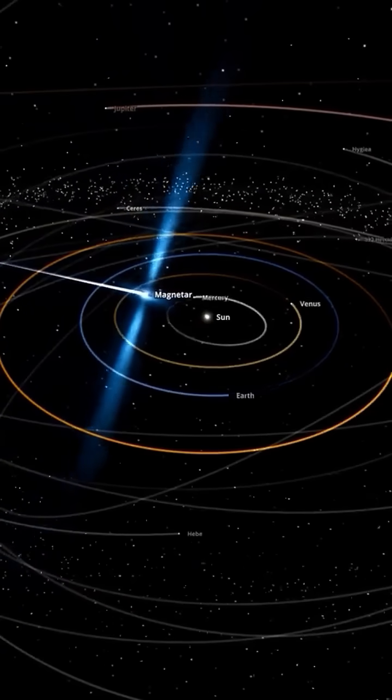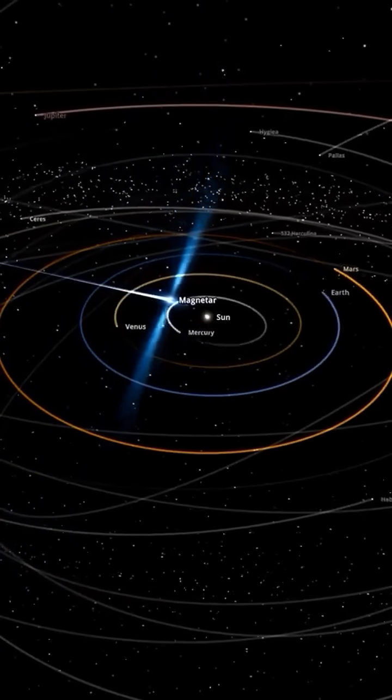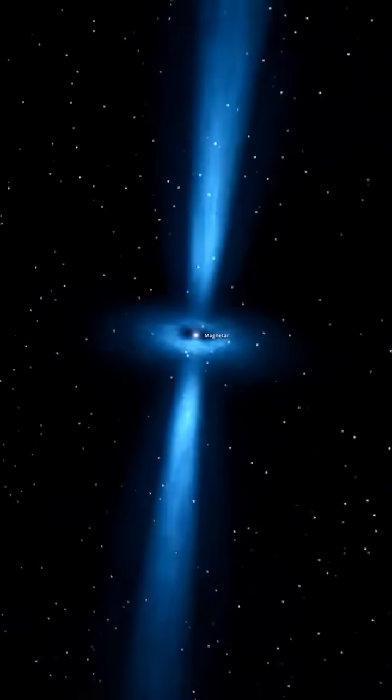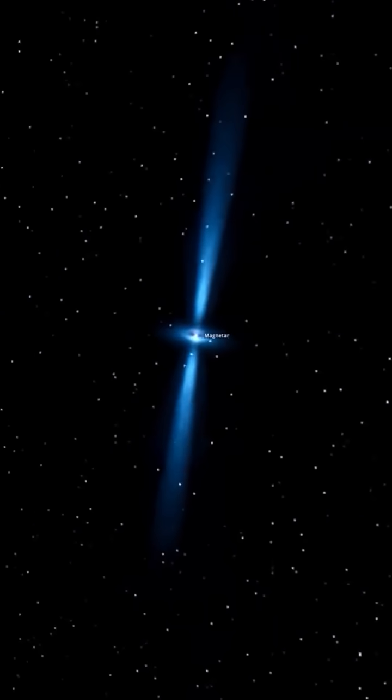What if a magnetar, the most powerful magnetic object in the universe, entered our solar system? A magnetar is a type of neutron star with a magnetic field trillions of times stronger than Earth's.